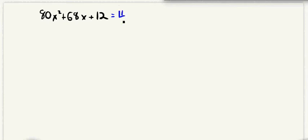So you're going to write this as four times, and then you're going to actually divide all of these by four. So 80 divided by four is going to give us 20x squared plus 68 divided by four is 17x plus 12 divided by four is three.